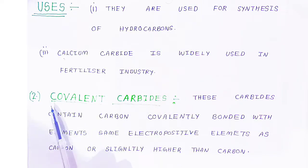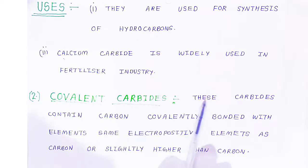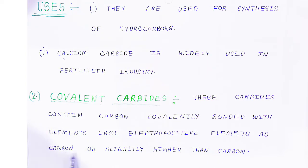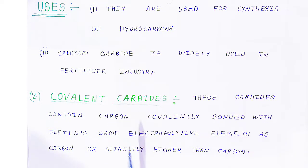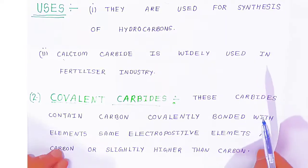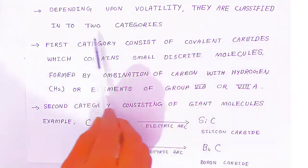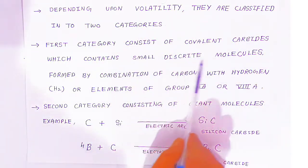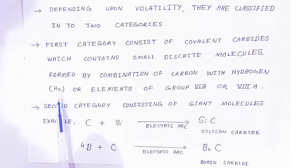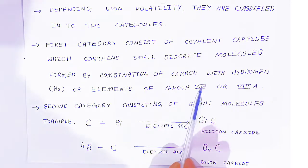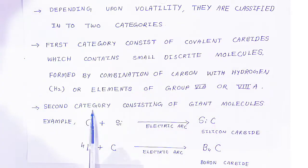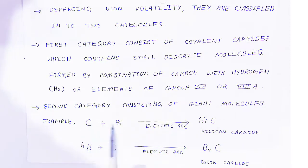The second type of carbide is covalent carbides. These carbides contain carbon covalently bonded with elements of similar or slightly higher electronegativity than carbon. Depending upon volatility, they are classified into two categories. The first category consists of covalent carbides which contain small discrete molecules, formed by combination of carbon with hydrogen and elements of group 6A and 8A. The second category consists of giant molecules — for example, carbon combined with silicon gives silicon carbide (SiC), since silicon has similar electronegativity to carbon.